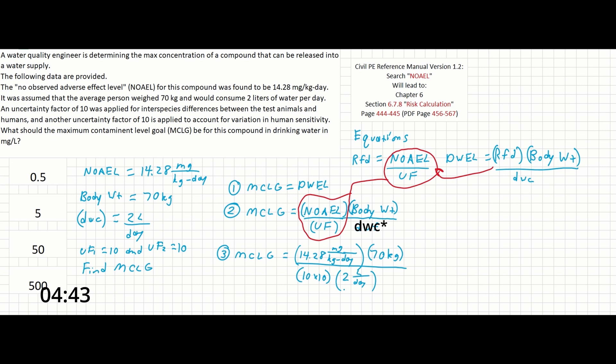And if we solve this out, first of all, we can cancel some units to determine that we're in the right units still. And we can see here that the end result is milligrams per liter, and our answer is just about 5, which we can see is one of our answers over here.